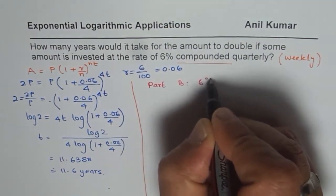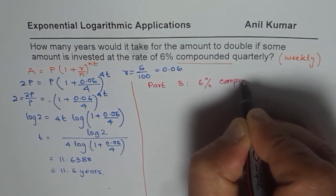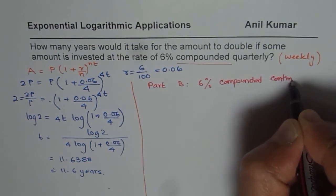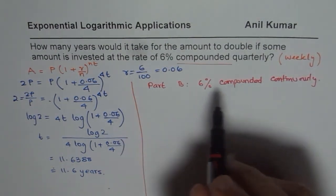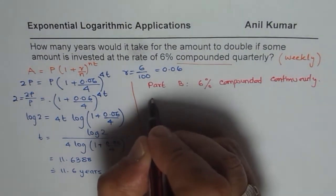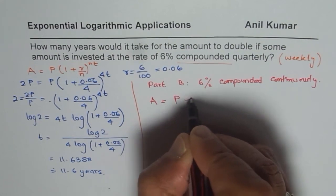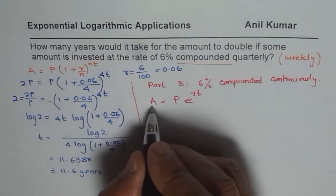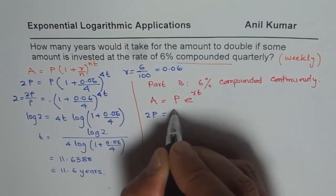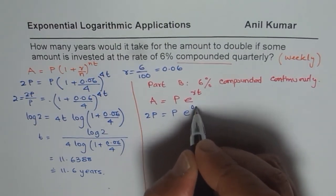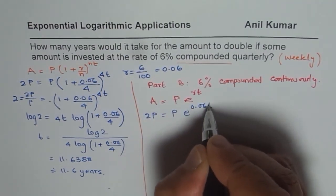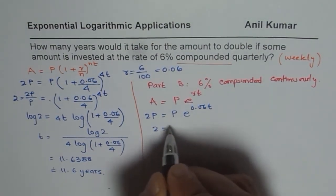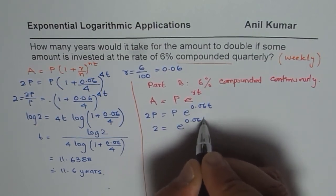Part B: 6% compounded continuously. If we are doing continuous compounding, the formula changes. It becomes A equals P times e to the power of RT. Since we want to double the amount, we set A equals 2 times P. So 2P equals P times e to the power of 0.06T. Dividing both sides by P, we get 2 equals e to the power of 0.06T.